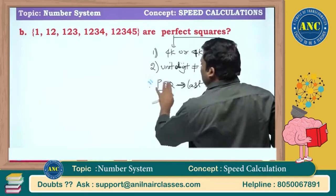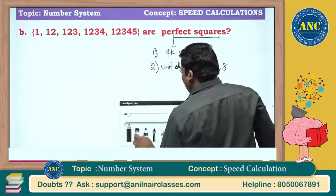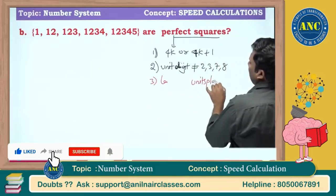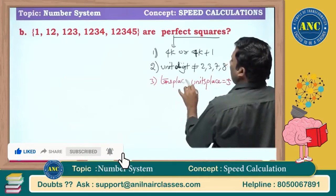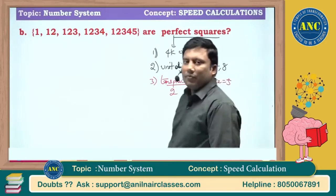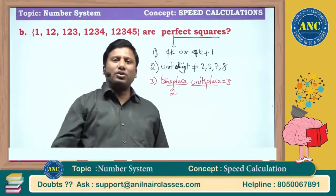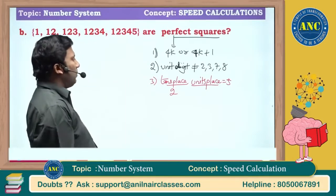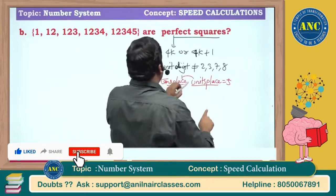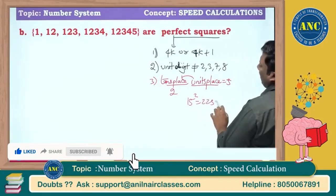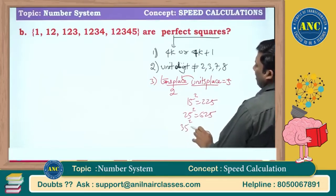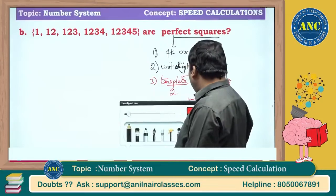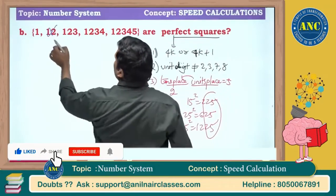We covered these in earlier sessions. If the units place is 5, the tens place will always be 2. Why? Because 35² = 35×35 — odd 5 into odd 5 gives 25. 65² — even 5 into even 5 gives 25. So if a perfect square ends in 5, the tens place is always 2. For example: 15²=225, 25²=625, 35²=1225 — any perfect square ending with 5 always has tens digit 2.